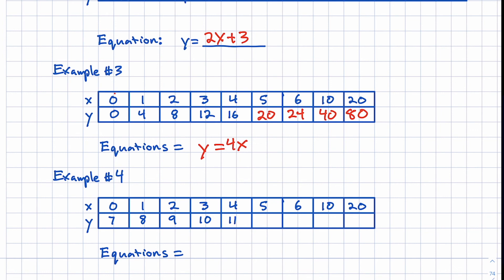Our last example: zero gives us seven, one gives eight, two gives nine, three gives ten, four gives eleven. It's probably not multiplication because zero turns into seven. We're definitely adding something. It's increasing by one each time, and looking more carefully — one turns into eight, two turns into nine — it's the X plus seven pattern. So Y equals X plus 7. Applying it: 5 plus 7 is 12, 6 plus 7 is 13, 10 plus 7 is 17, and 20 plus 7 is 27.